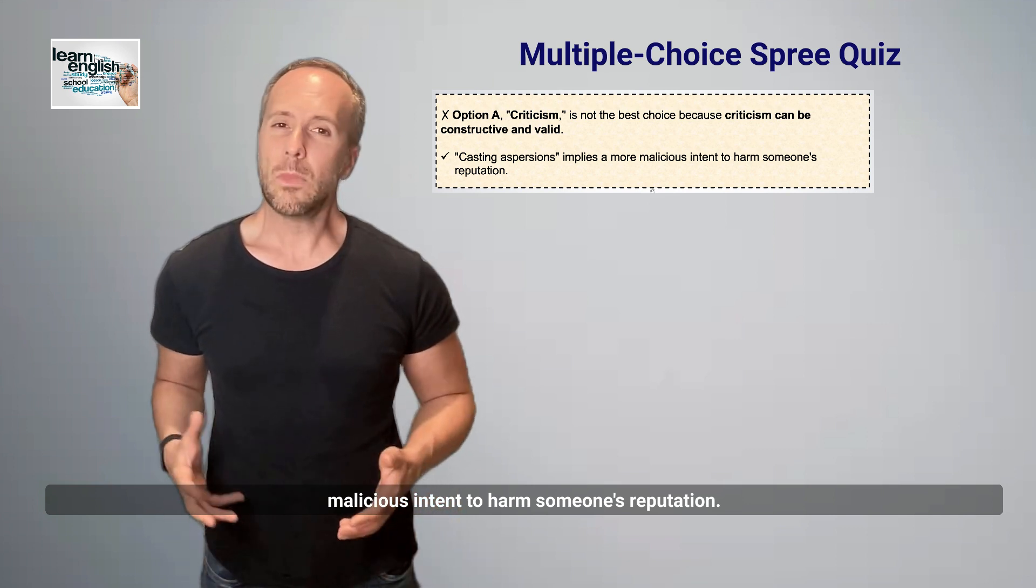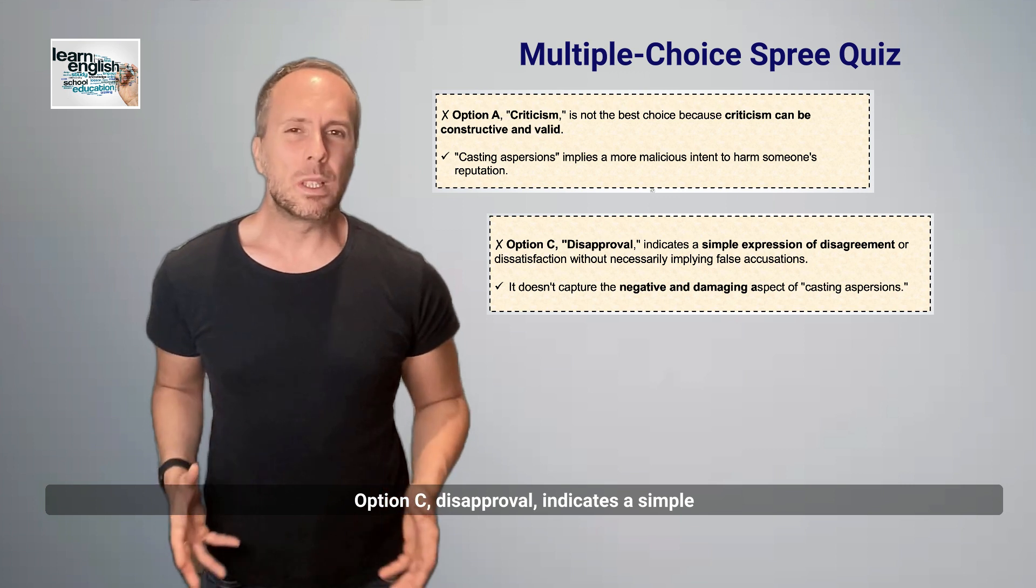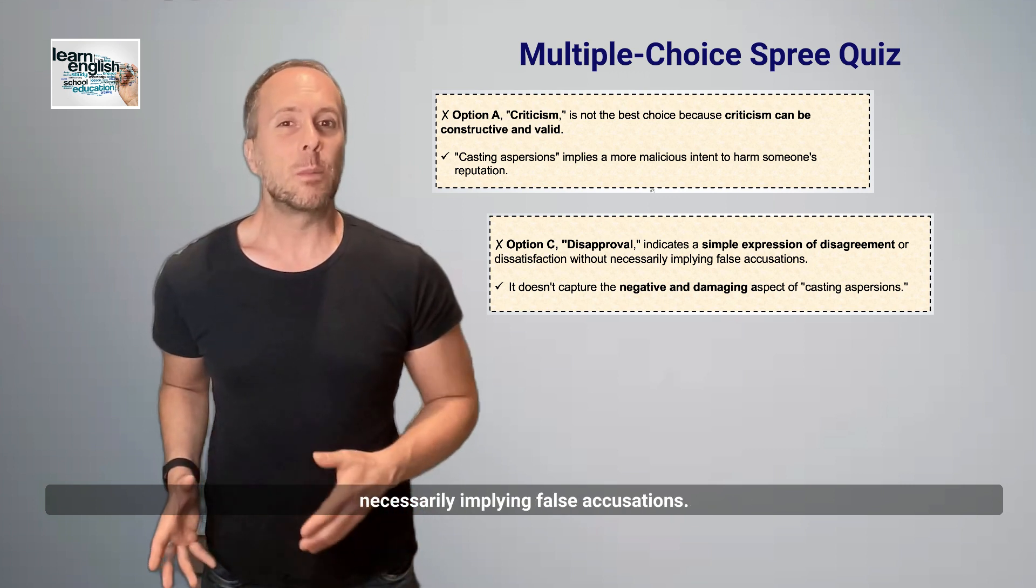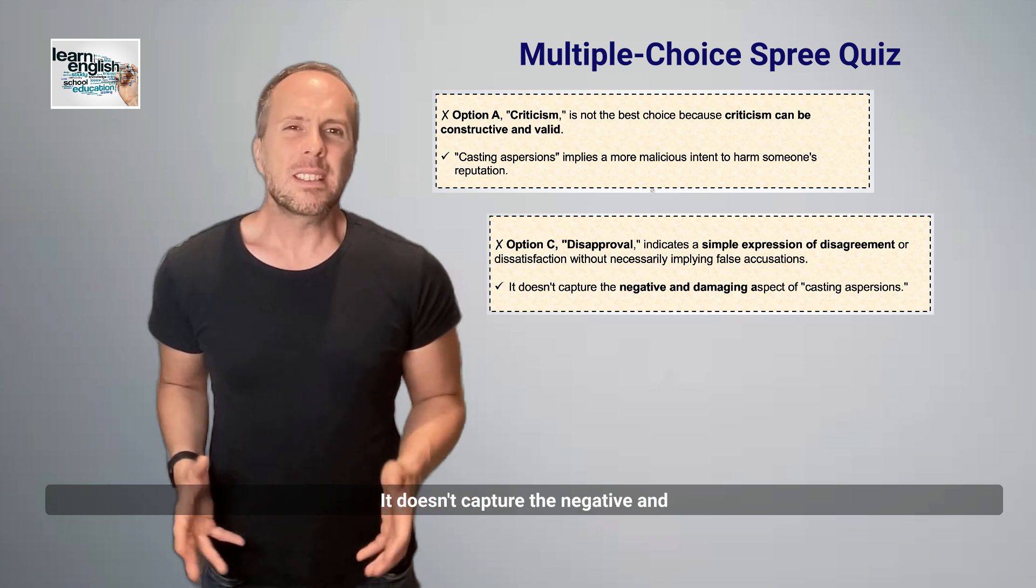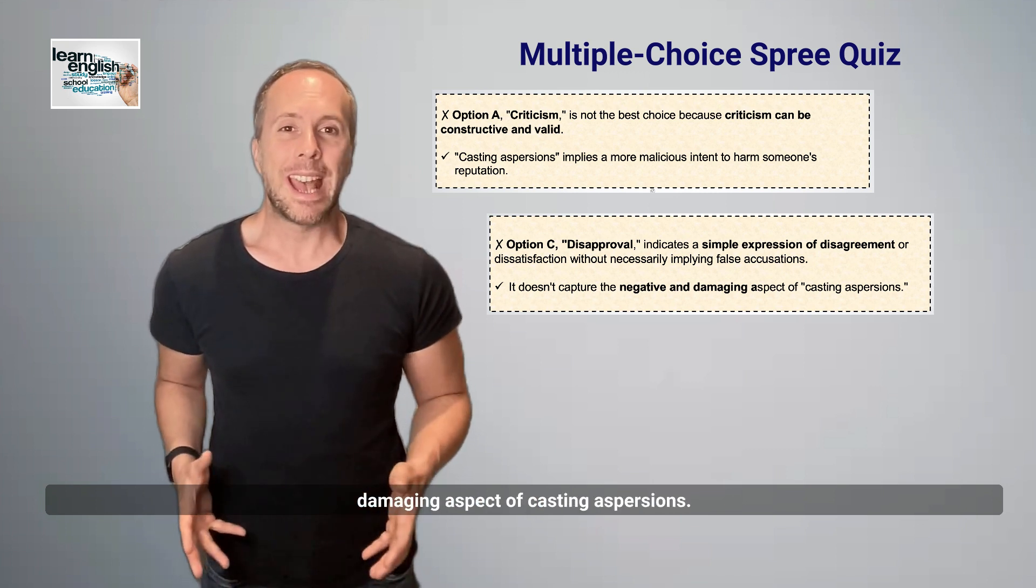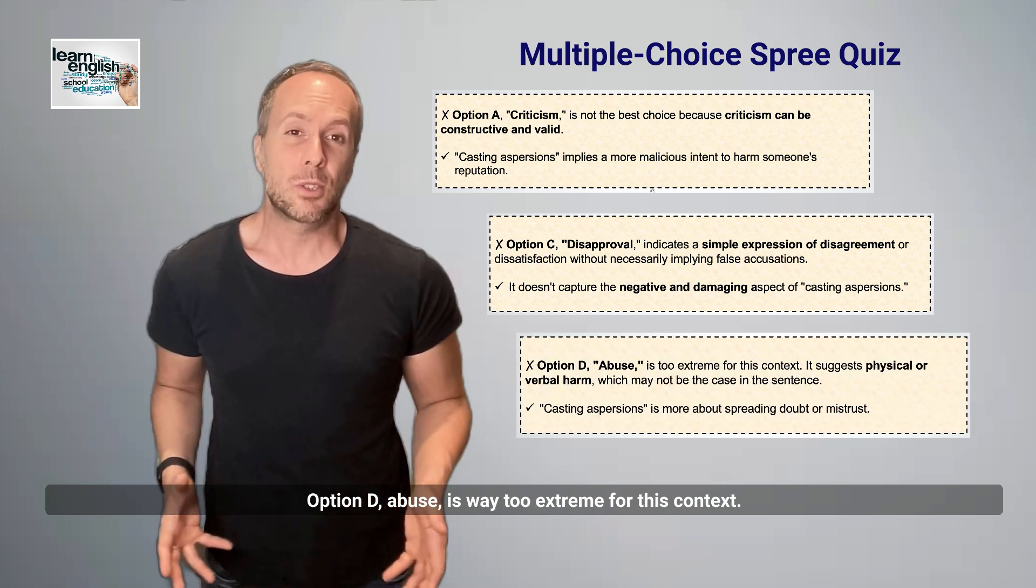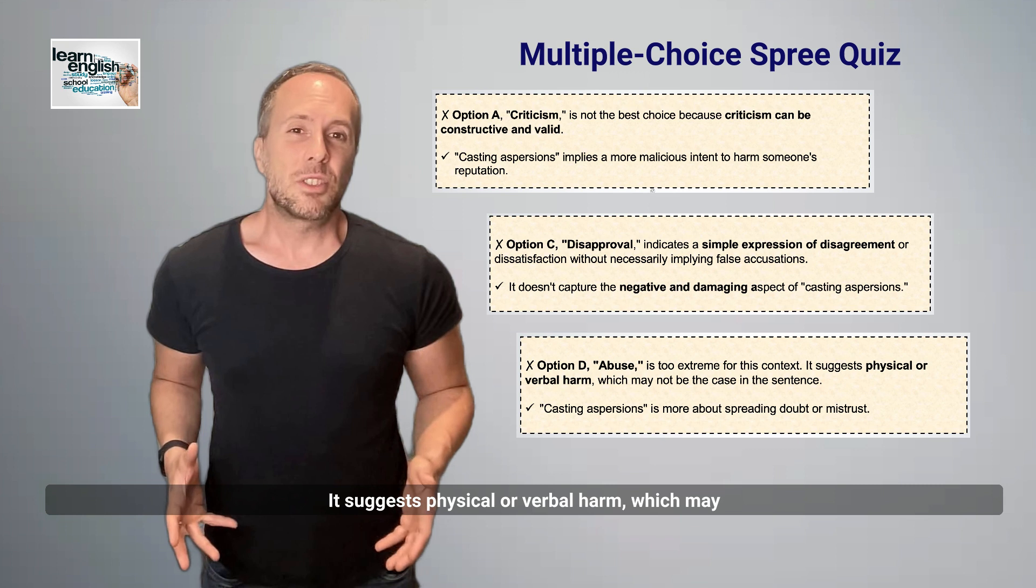Option C, disapproval, indicates a simple expression of disagreement or dissatisfaction without necessarily employing false accusations. It doesn't capture the negative and damaging aspect of casting aspersions.